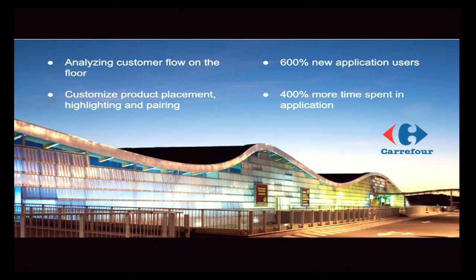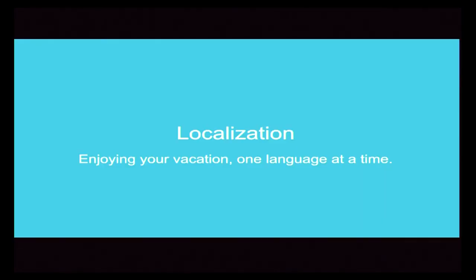For Carrefour, there's the analytics angle — they know everywhere you went in the store, so they can optimize: people linger in this aisle longer than that one, so put those popular products on end caps and less-visited products in the middle. They start to optimize via A-B testing physically within the store to best promote consumption. The result was 600% new application users and 400% more time spent in the application — a phenomenal metric achieved just by extending their existing channels with beacons.